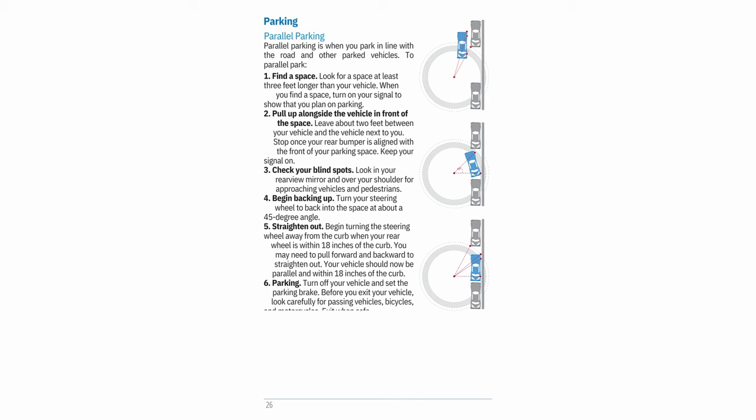Parking — Parallel parking: To parallel park: 1. Find a space at least 3 feet longer than your vehicle and turn on your signal. 2. Pull up alongside the vehicle in front of the space, leaving about 2 feet between your vehicles — stop once your rear bumper is aligned with the front of your parking space. 3. Check your blind spots — look in your rearview mirror and over your shoulder for approaching vehicles and pedestrians. 4. Begin backing up, turning your steering wheel to back in at about a 45-degree angle. 5. Straighten out — begin turning the steering wheel away from the curb when your rear wheel is within 18 inches of the curb; your vehicle should now be parallel and within 18 inches of the curb. 6. Turn off your vehicle, set the parking brake, and exit when safe.